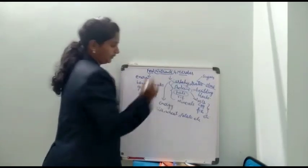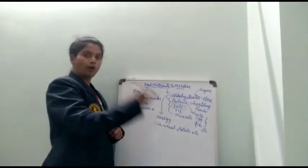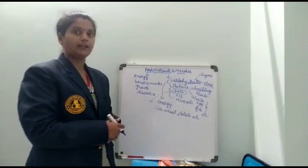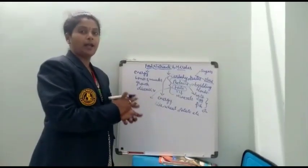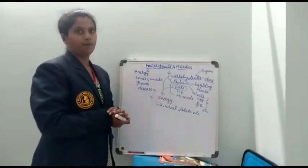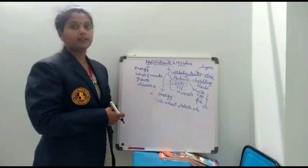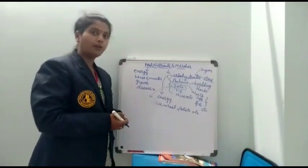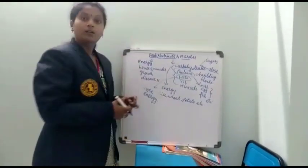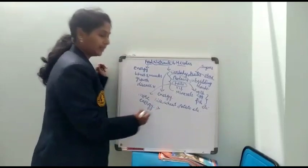Next, coming to fats. Fats are also an energy-giving food, but compared to carbohydrates they give more energy. To understand fats, take some groundnuts, place them on paper and press — you will see an oil patch on the paper. That is nothing but the presence of fat. You can see fat in groundnuts, almonds, and cashew nuts.